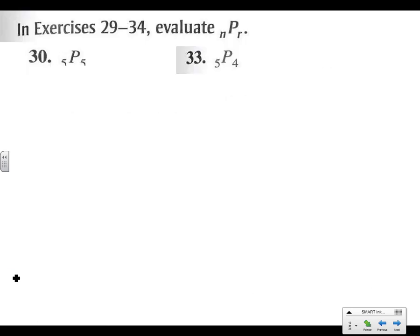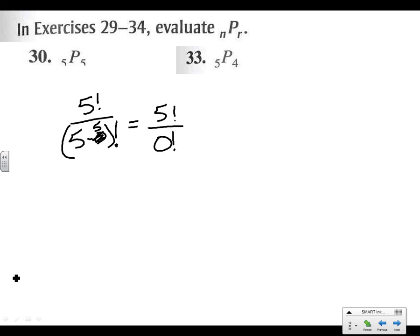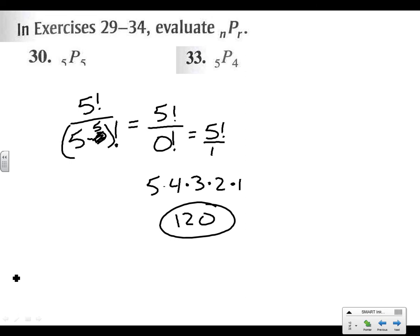Let's move on to P(5,5). We have 5 factorial on top. On the bottom we do subtraction, and since this is a permutation that's all we write: 5 factorial over (5−5) factorial, which is 0 factorial, which equals 1. So it's just 5 factorial: 5 × 4 = 20 × 3 = 60 × 2 = 120 × 1 = 120.